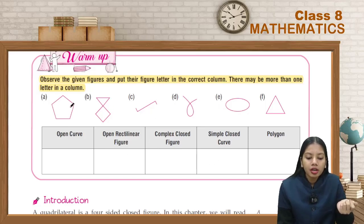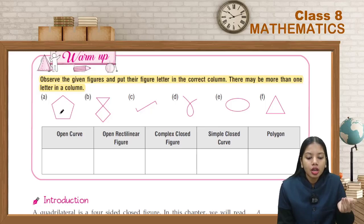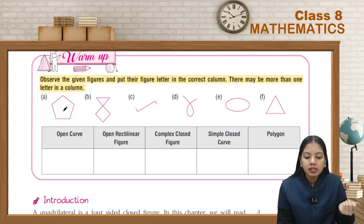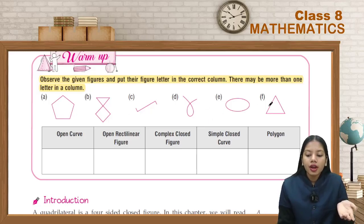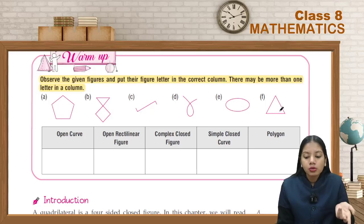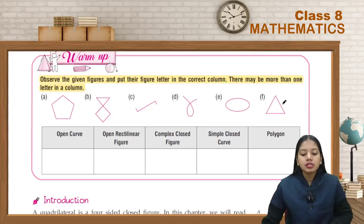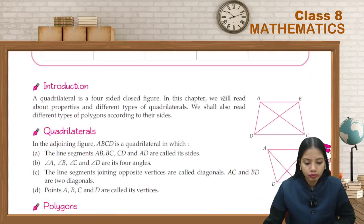For example, we can see here a pentagon given here. So this is a closed figure, a simple closed figure, and this is a polygon. We can also see a complex closed figure here. And this is a triangle — a polygon, a simple closed figure. So this way you have to fill them in the table.